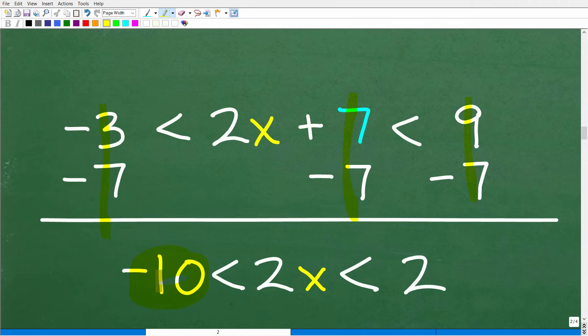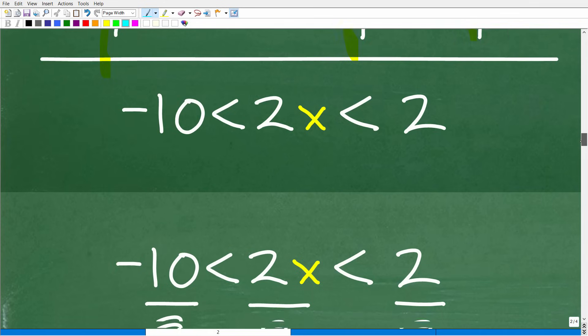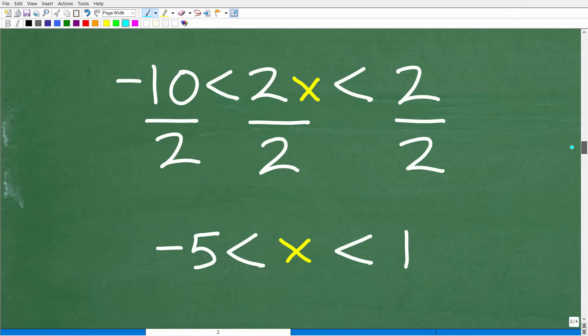So negative 3 minus 7, 2x plus 7, we're going to subtract 7, and then 9 minus 7. We're simply going to add down in a column manner. So negative 3 minus 7 is negative 10. That's going to be in between this 2x plus 7. Now we just have our 2x by itself. And then 9 minus 7 is 2. So what do you think our next move is? Well, if you said I think we have to divide by 2, you would be correct.